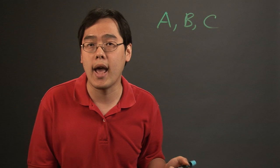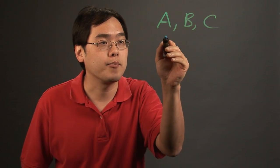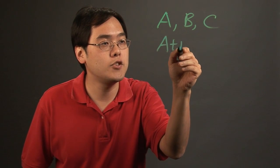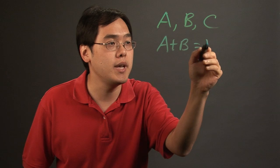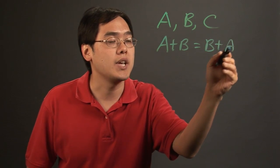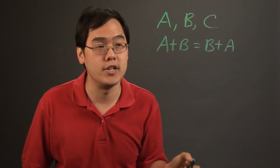Addition is probably the most straightforward of the operations. If you have two matrices added together, A plus B, that's going to equal B plus A. That's the commutative property of addition.